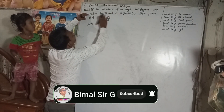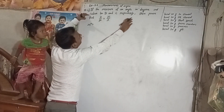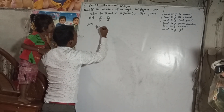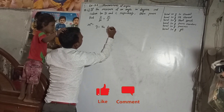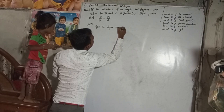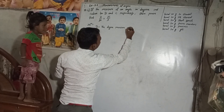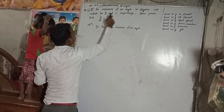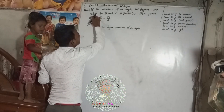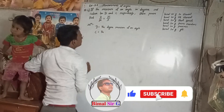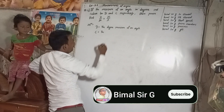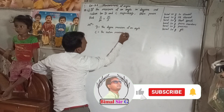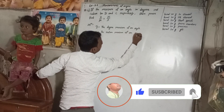Here D is equal to the degree measure of an angle. In the same way, C is the radian measure of an angle.